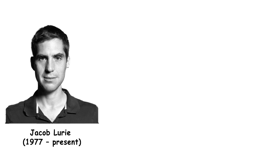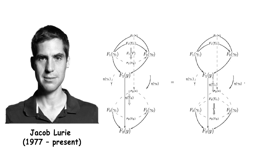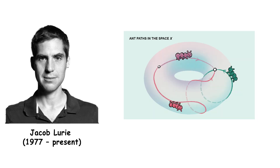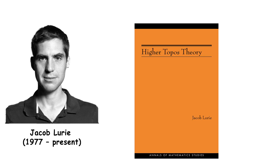Jacob Lurie is an American mathematician recognized for his groundbreaking work in higher category theory and homotopical algebra. Lurie's work on the foundations of derived algebraic geometry and the development of infinity category theory has revolutionized the field, particularly with his influential book Higher Topos Theory.